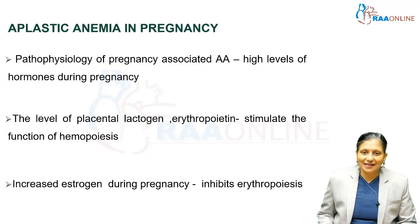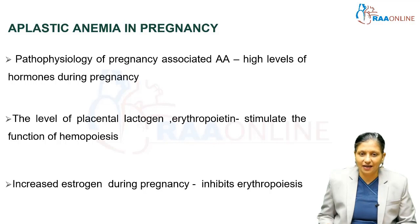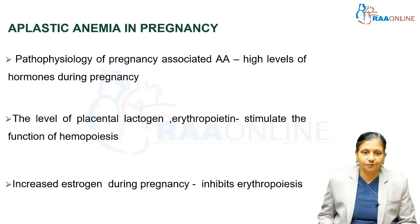The pathophysiology of pregnancy-associated Aplastic Anemia is associated with high levels of hormones like estrogen and progesterone during pregnancy. The levels of placental lactogen and erythropoietin, which are high in pregnancy, stimulate the function of hemopoiesis. Increased estrogen during pregnancy inhibits erythropoiesis.